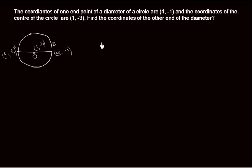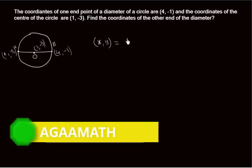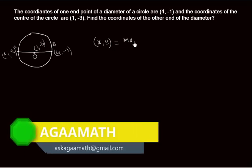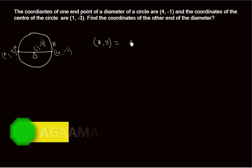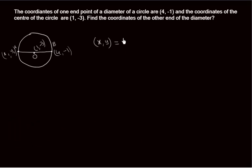We have to find the coordinates of A. So we use the midpoint formula. In the previous class we saw the derivation of the midpoint formula — how to find the midpoint of given coordinates. The midpoint formula is: x comma y equals (x1 + x2) / 2 comma (y1 + y2) / 2.